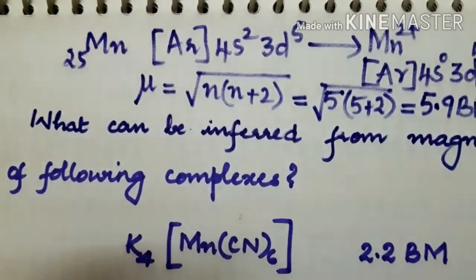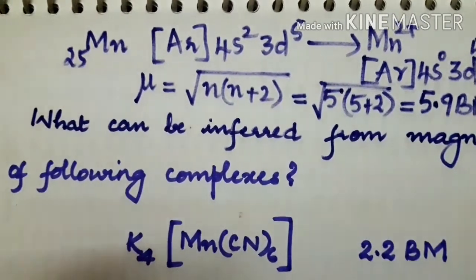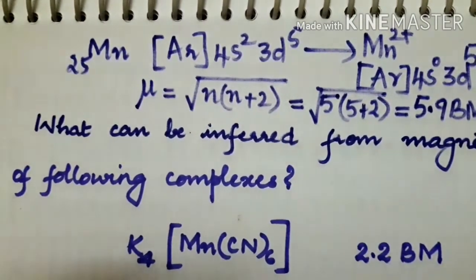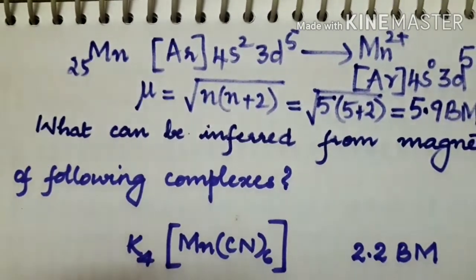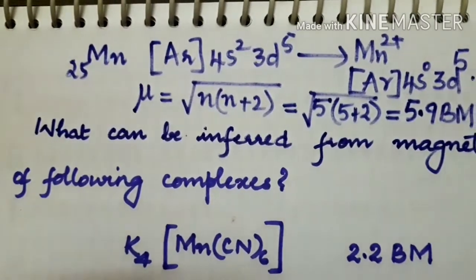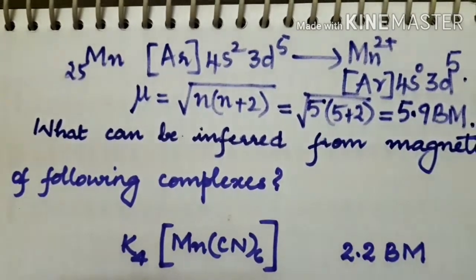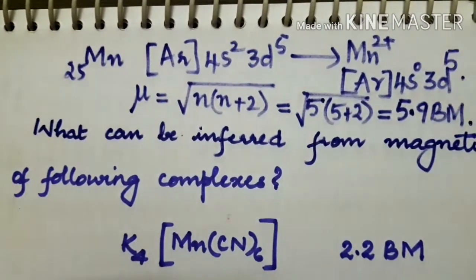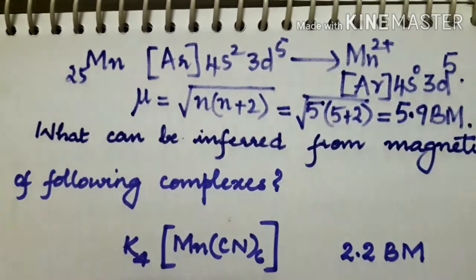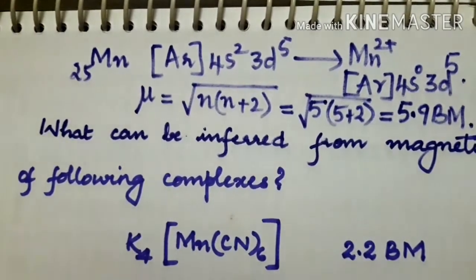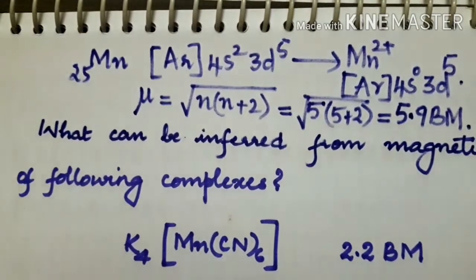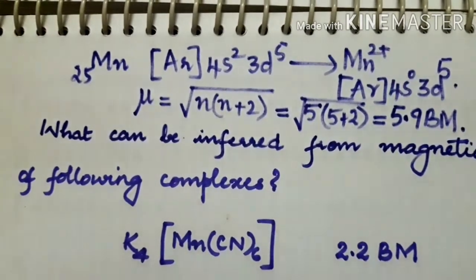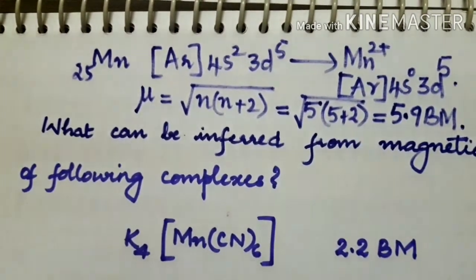Third example: manganese, atomic number 25, has configuration [Ar] 4s² 3d⁵. On removing two electrons it becomes Mn²⁺ with configuration [Ar] 3d⁵, giving 5 unpaired electrons. So the mu value is √(5 × 7) = √35 ≈ 5.9 Bohr magneton.